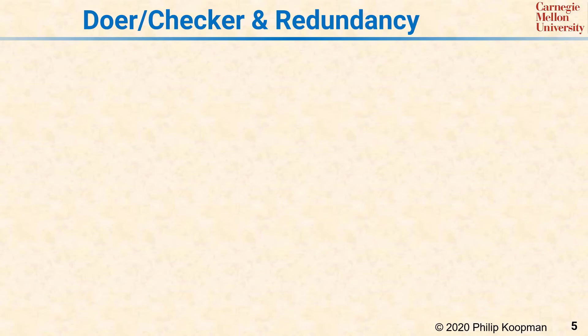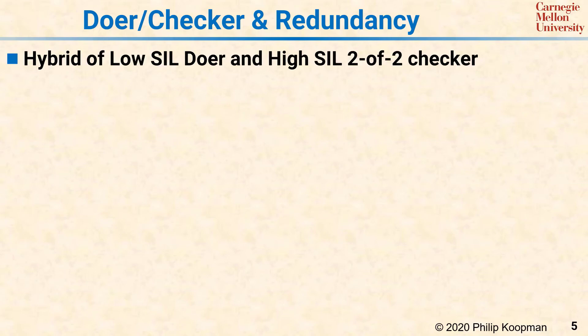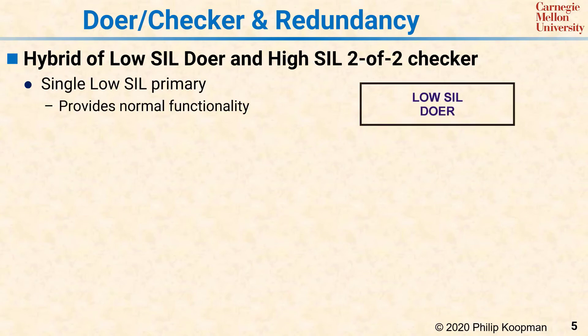Another redundancy mechanism is the doer-checker approach, sometimes called a monitor-actuator pair. An example is a combination of a low-SIL doer and a high-SIL checker. The low-SIL doer is in charge of normal system operation; however, it might end up doing something unsafe, so the system is designed to fail-silent by having a checker shut down the whole thing if the doer misbehaves.